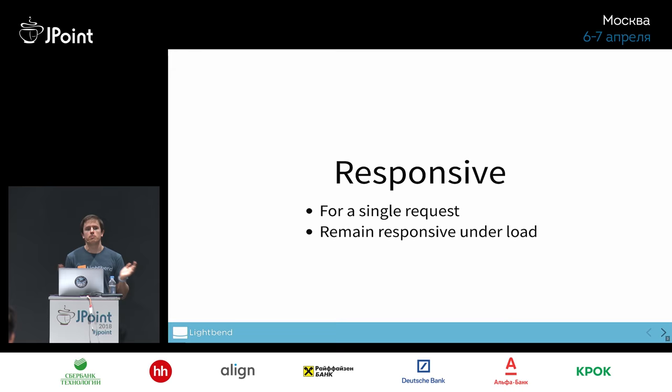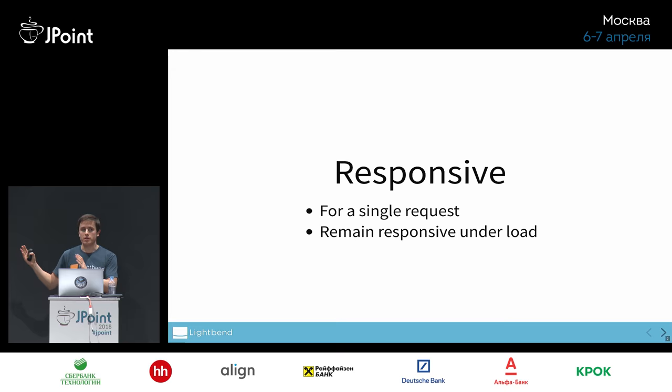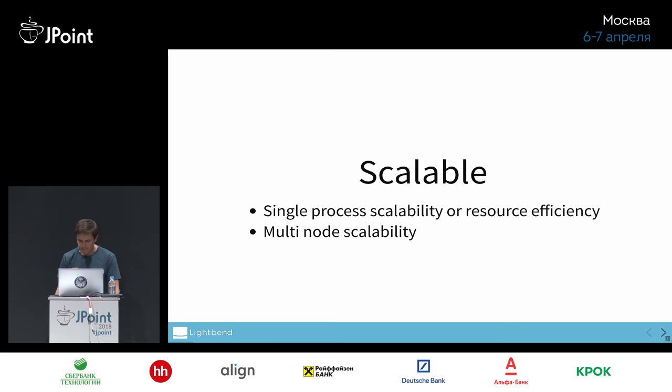Another way to think about this is not just concurrent requests but the amount of memory you've capacity-planned for. Say your containers have four gigabytes of RAM and you give two gigabytes to the heap. What happens when an unexpected request comes in and it's pulling something unbounded from a database — like all events for a user — and brings too much into memory? The better approach is to tie the rate at which data comes back from the database to the rate at which you can write it to the TCP socket on the other side.